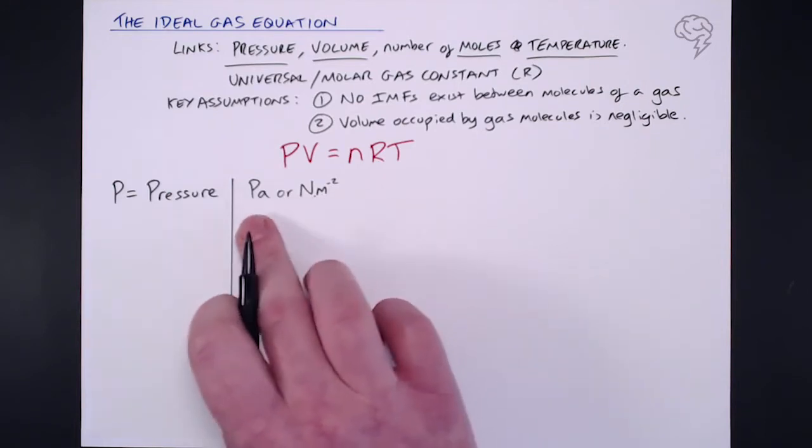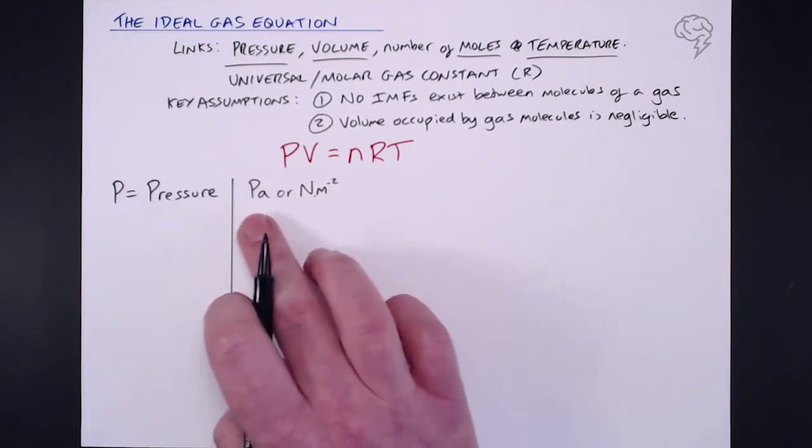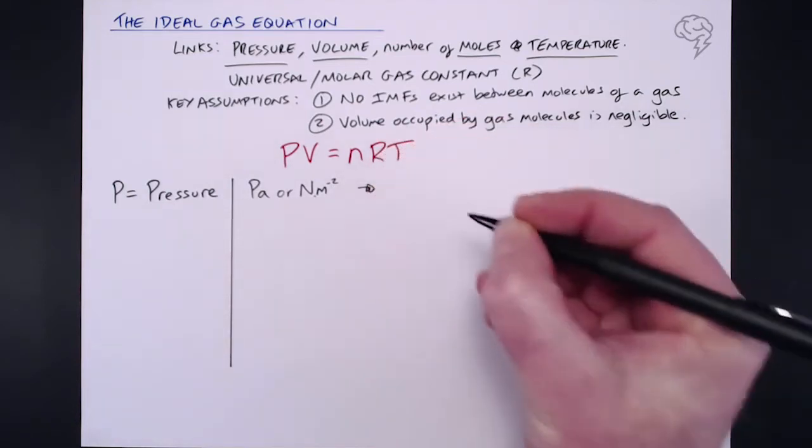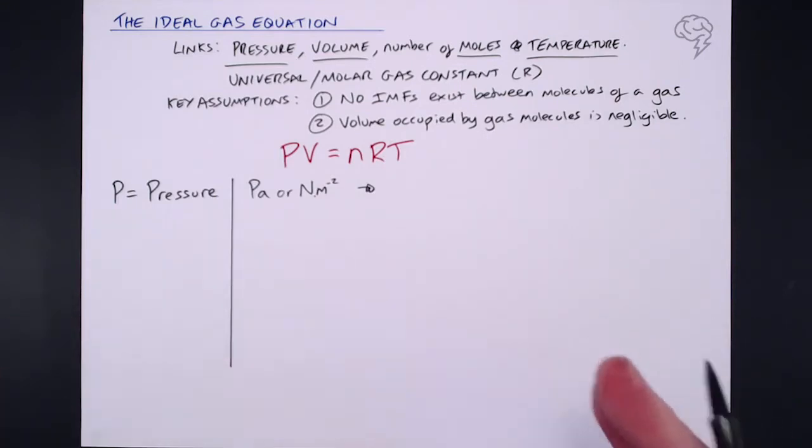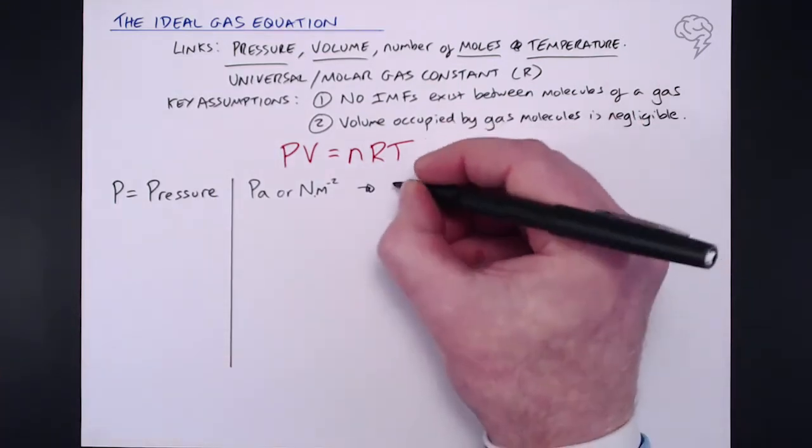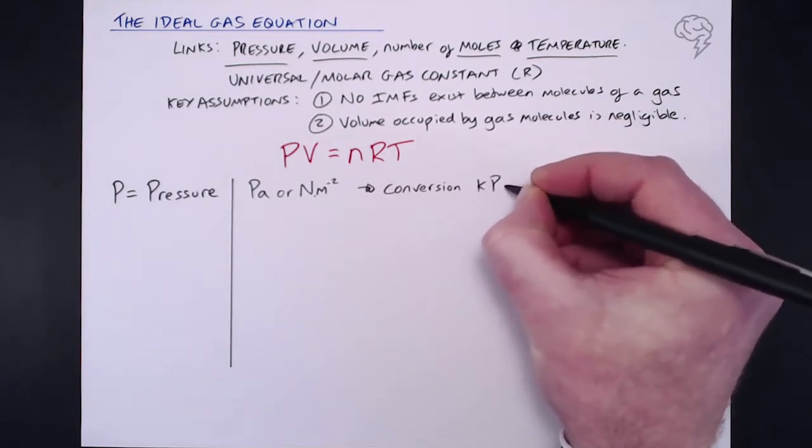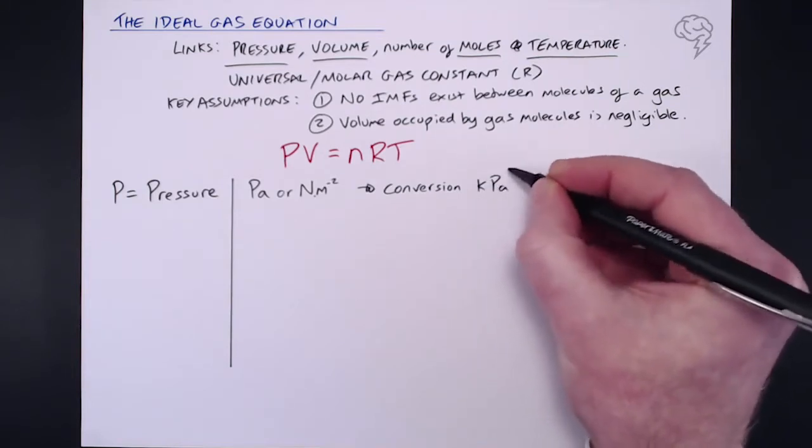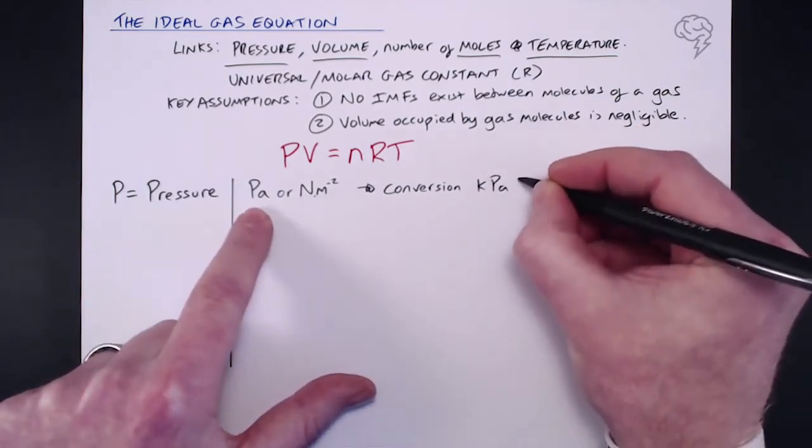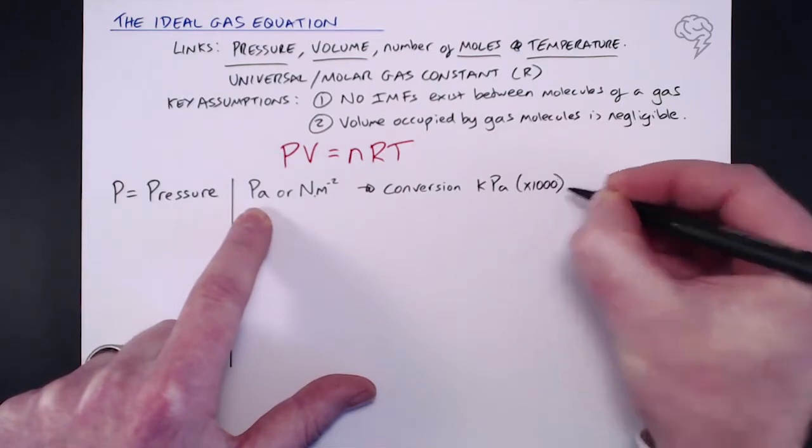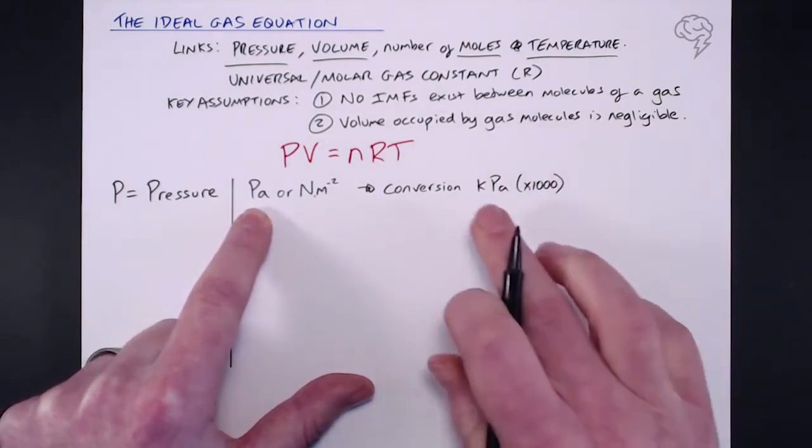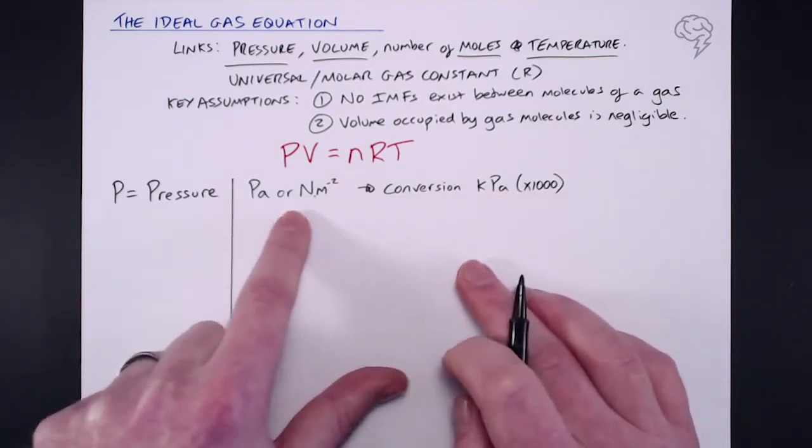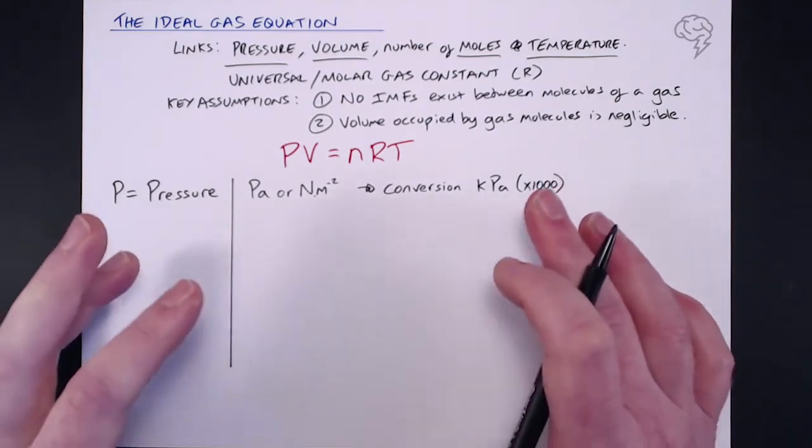So if you see this, don't panic, it means exactly the same thing as a pascal. Now these are very small units. So in terms of conversions, you must be able to convert them if you're given another type of unit. The most common conversion is from kilopascals. Now, of course, kilo means a thousand. So if you are given in kilopascals to turn that into pascals, what you must do is multiply by one thousand. So usually for pressure, you're going to be dealing with a massive number.